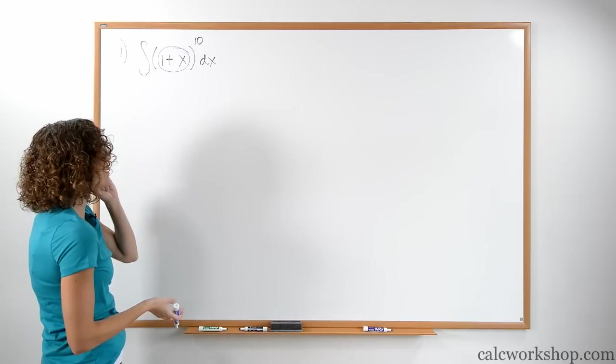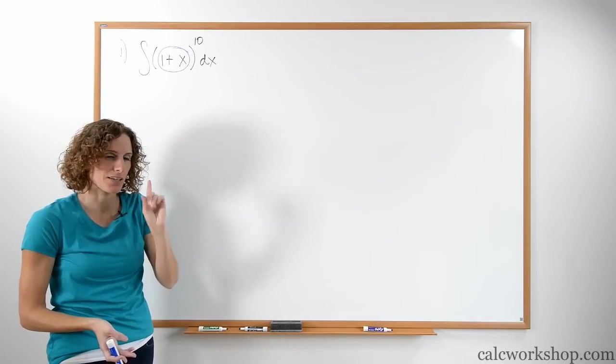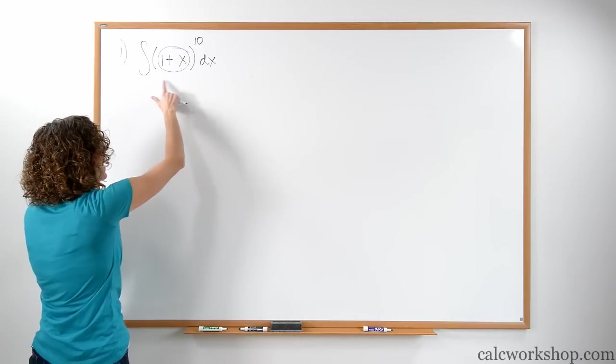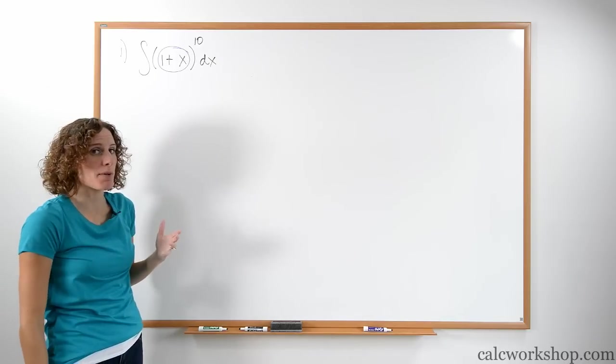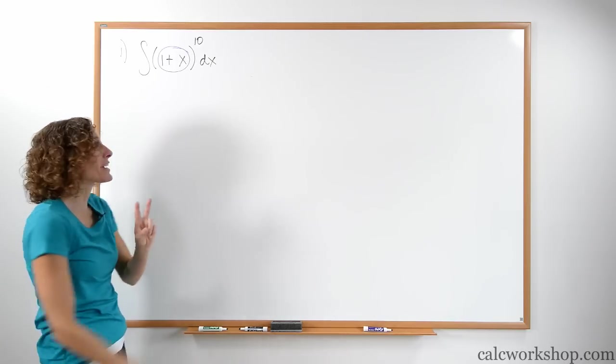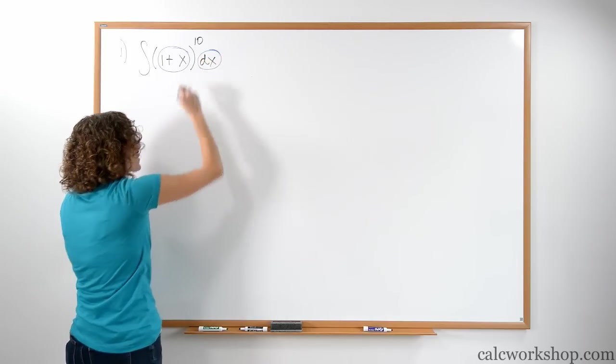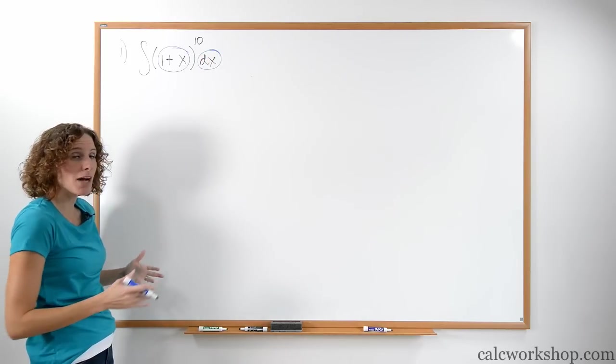But in order to pull him out and say he is no longer going to be part of my problem, its derivative has to be there. Well, what I know is that one plus x, the derivative of one plus x is one. Well, this whole thing can always be multiplied by one. We can make a change. So there are always two things that we replace. We replace the inside piece, and we're also going to have to replace the dx.